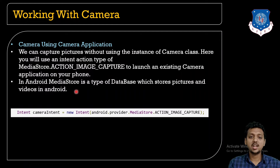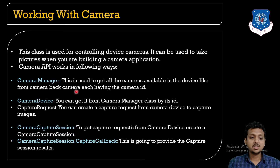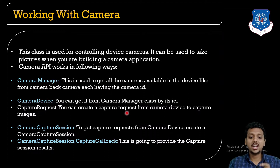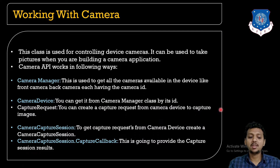In Android, MediaStore is a type of database which stores pictures and videos. The next method is to implement the camera using the Camera class. The Camera API works as follows: CameraManager is the class used to get all cameras available on the device, like the front camera, back camera, and every camera. CameraDevice can be obtained from the CameraManager by its ID. CaptureRequest is created from the CameraDevice to capture images.